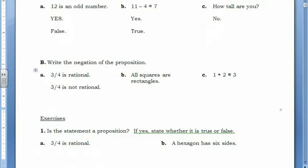So, all squares are rectangles. Not all squares are rectangles.